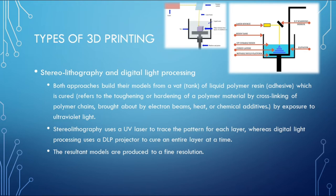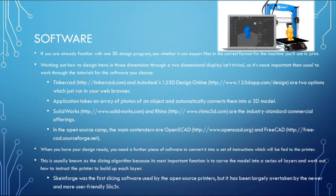The next method of 3D printing is Stereolithography (SLA) and Digital Light Processing (DLP). This is possibly the oldest 3D printing technique. This approach builds models from a vat of liquid polymer resin which is cured by exposure to ultraviolet light. Stereolithography uses a UV laser to trace the pattern for each layer, whereas Digital Light Processing uses a DLP projector to cure an entire layer at a time.